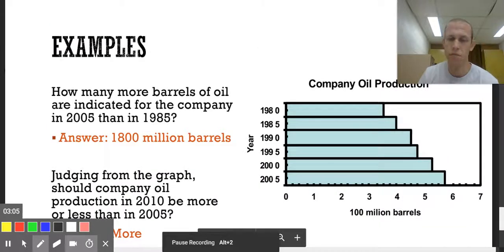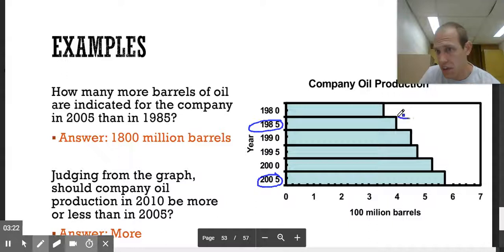Here we have a company's oil production, and the bar graph is now switched on us, so it's horizontal. How many more barrels of oil are indicated for the company in 2005 than in 1985? So 2005 is right here, 1985 is right here, and we're looking for the gap between these two. So it looks like if I kind of drag down here, there's 400 million right here, and I would say that's 5. And this is broken into one, two, three, four categories, so 25, 50, 75. So I'd say this is 5.75. So 4 million and 5.75 million, and when you subtract those two, you would get an answer of 1,800 million barrels.